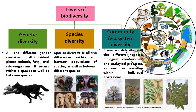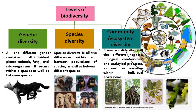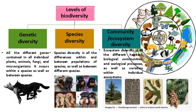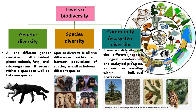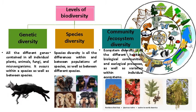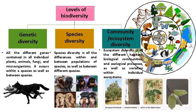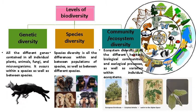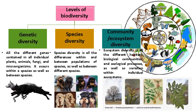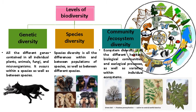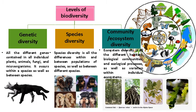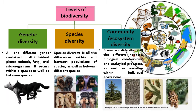Now we will move on to ecosystem diversity. It is the variety of ecosystems in a given place, like tropical or temperate forests, hot and cold deserts, wetlands, rivers, mountains, coral reefs, etc. Each ecosystem corresponds to a series of complex relationships between biotic and abiotic components, which includes sunlight, air, water, minerals, and nutrients.